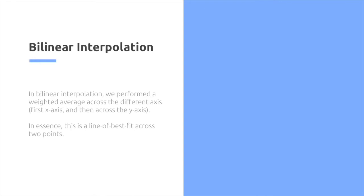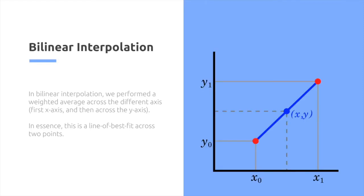Meanwhile, for bilinear interpolation, we performed a weighted average across the different axes, first the x and then the y. So essentially we did something like a line of best fit between two points.